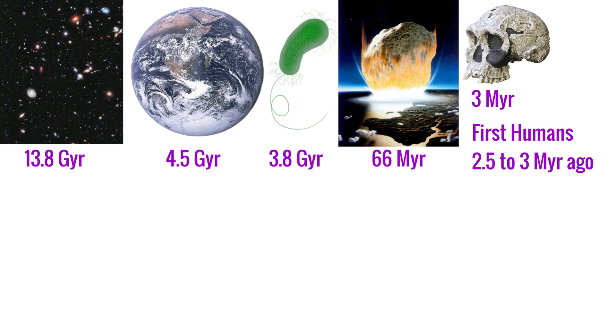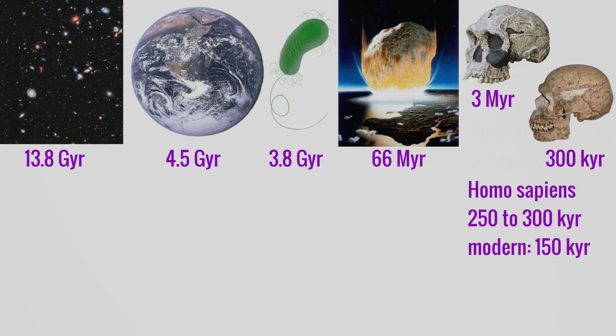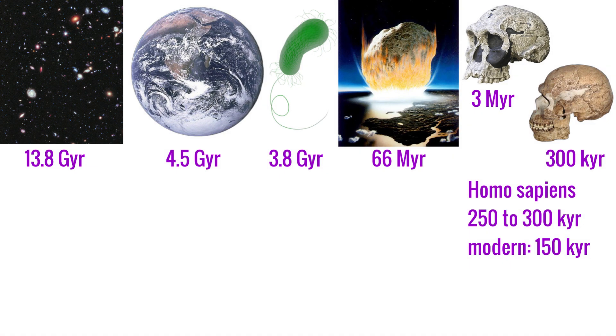Humans appeared 2.5 to 3 million years ago, and then Homo sapiens about 250 to 300,000 years ago, becoming anatomically modern about 150,000 years ago.